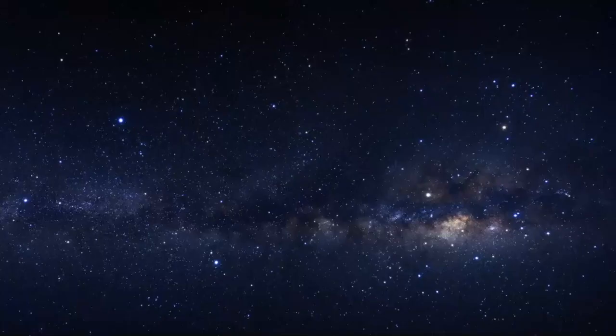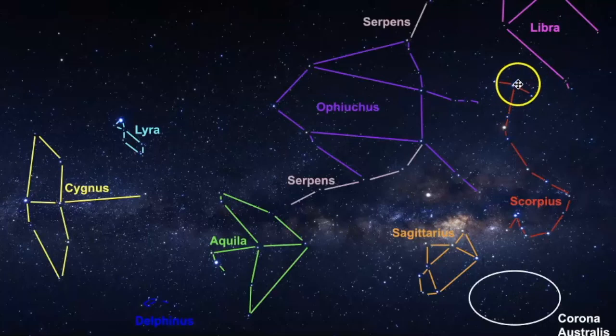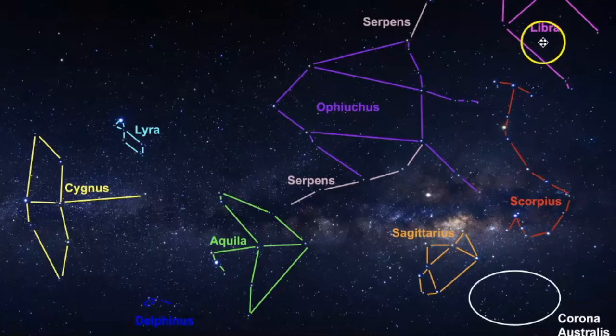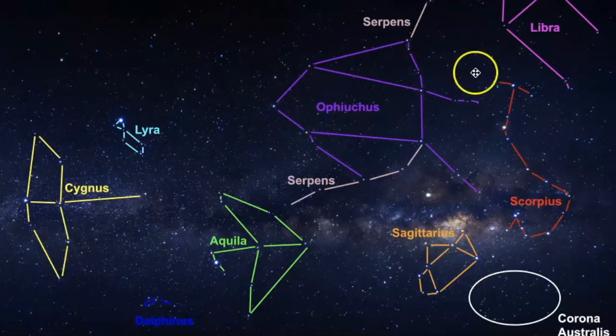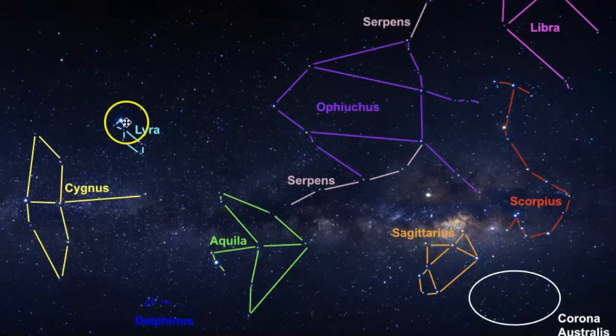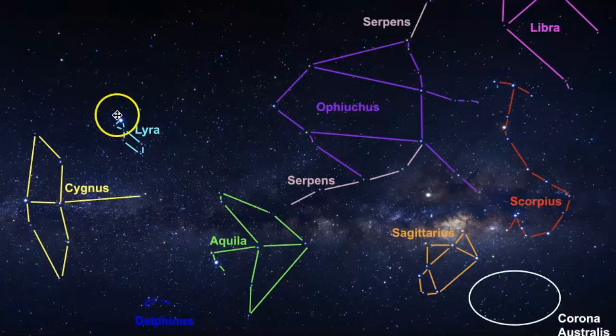So some things to point out, we have the summer triangle asterism. I have a whole video on that. And then you can also see the Milky Way, which is brightest in the summer months in the Northern Hemisphere. And if we were to point everything out here, this is where Scorpius is. Here is where Antares is. This is Libra. We have Sagittarius. And then Ophiuchus takes up a large portion of the sky. So I've got videos on all these constellations. And then the three constellations that make up the summer triangle asterism include Lyra, Cygnus, and Aquila.